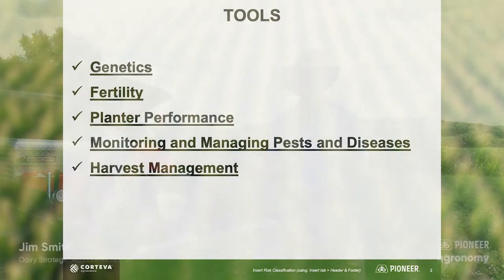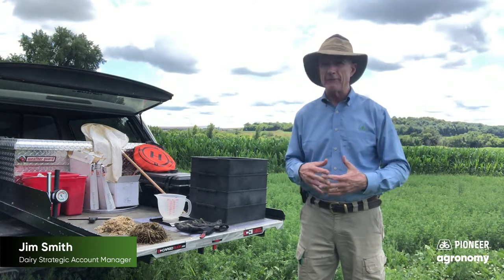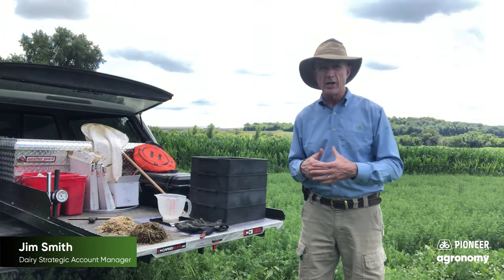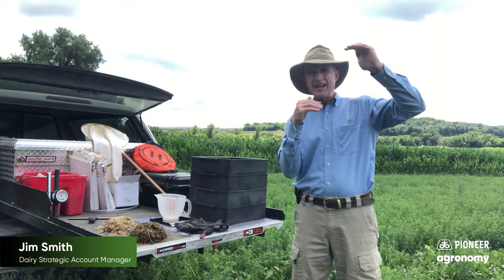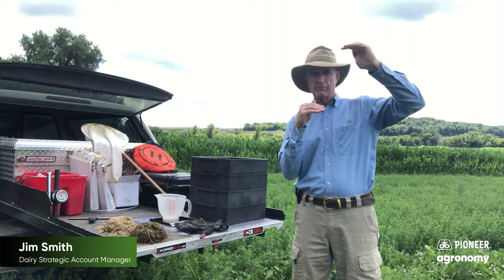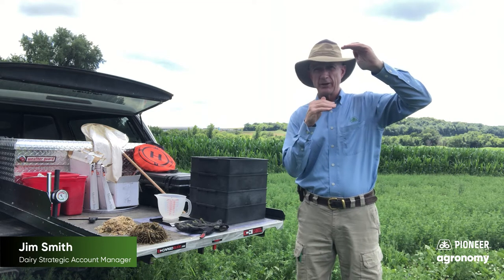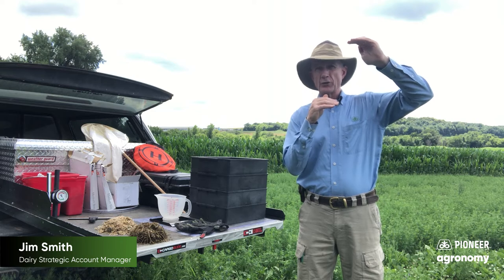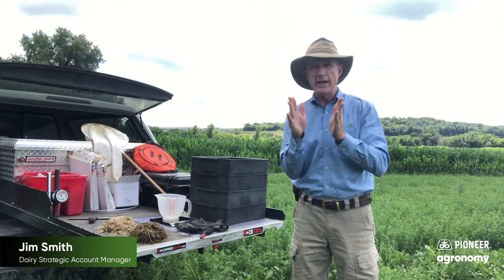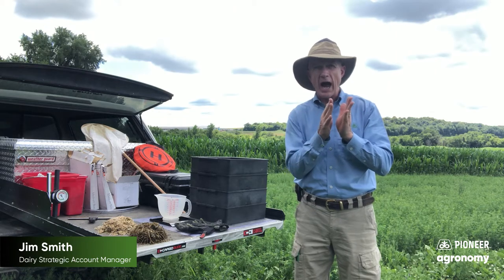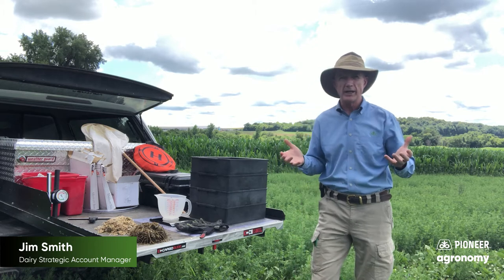So let's start with genetics. When we look at corn, the two major choices we have on fiber digestibility are brown midrib hybrids and standard hybrids, non-BMRs. There's going to be a fiber digestibility difference that you can choose from, and even within the standard hybrids, there's a bit of a range from low to high that you can also select from based on the criteria that we've accumulated with our research.